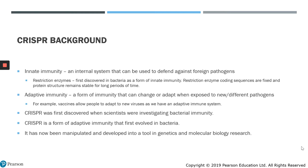However, when we discuss adaptive immunity, we talk about a form of immunity that can change or adapt when exposed to new or different pathogens. For example, vaccines allow people to adapt to new viruses, as humans have an adaptive immune system. CRISPR was first discovered when scientists were investigating bacterial immunity, and CRISPR is a form of adaptive immunity that evolved in bacteria. The CRISPR system has now been manipulated and developed into a tool for genetics and molecular biology research.